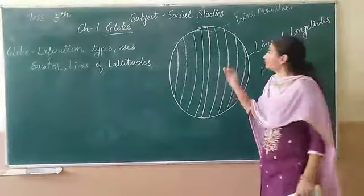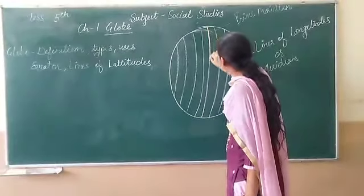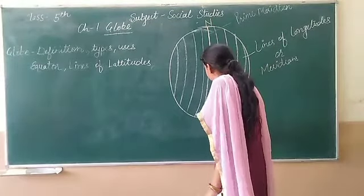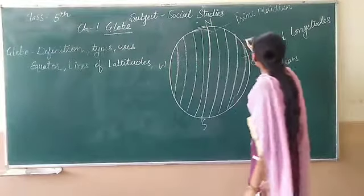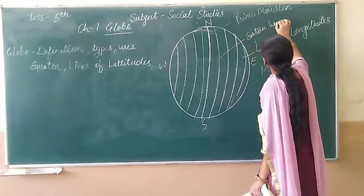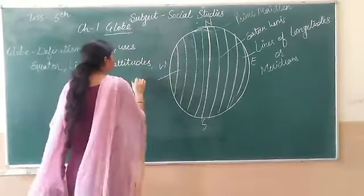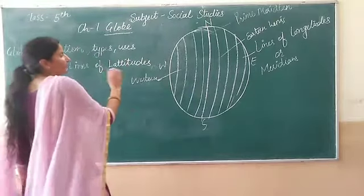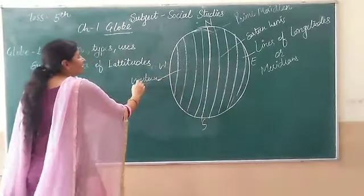The eastern hemisphere and the western hemisphere. To the east is the Eastern Hemisphere and to the west is the Western Hemisphere. These two equal parts are divided by the Prime Meridian.